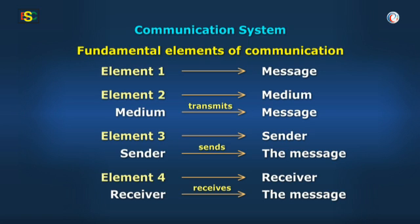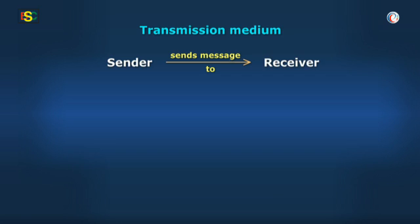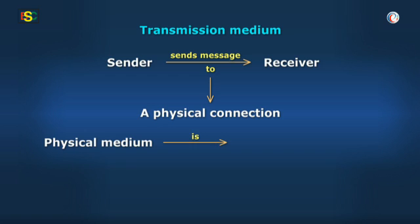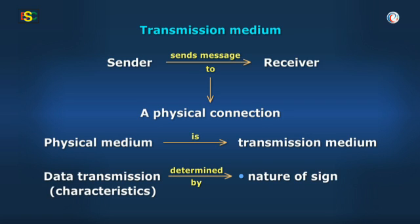So first, let's understand what a transmission medium is. As explained, every communication system has a transmitter, which is the sender of the message, and a receiver, which receives the message. Between these two, there has to be a physical connection which conveys the message forward and backwards. This physical medium is known as the transmission medium. The characteristics of the data transmission are determined by the nature of the signal along with the properties of the transmission medium.